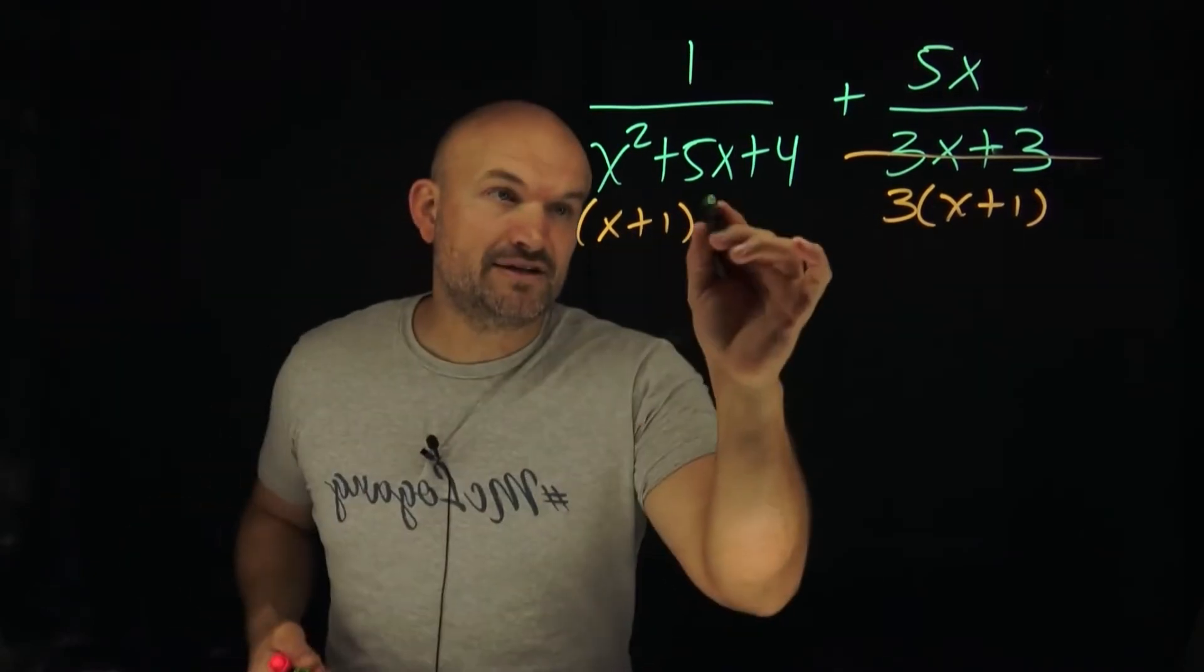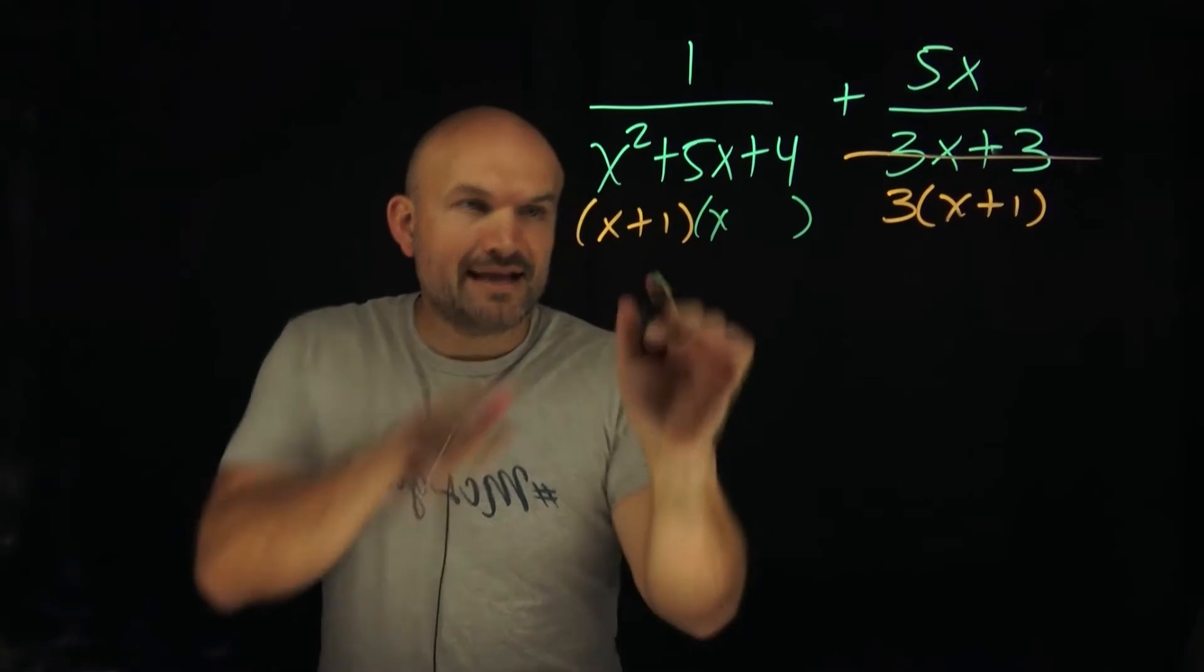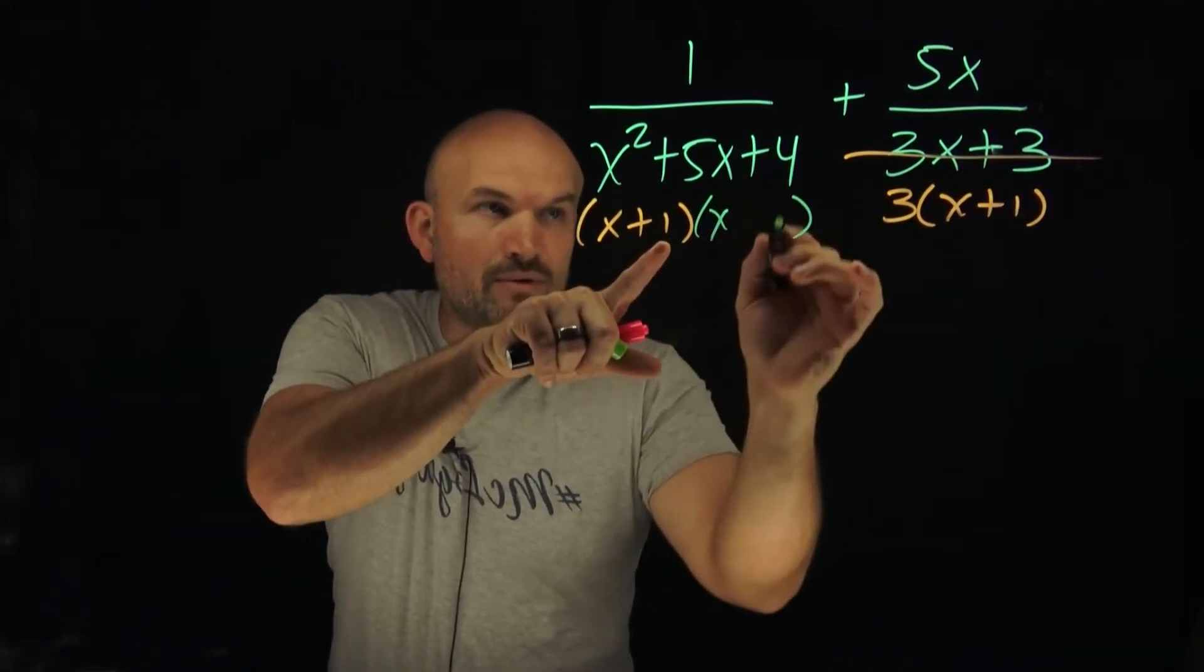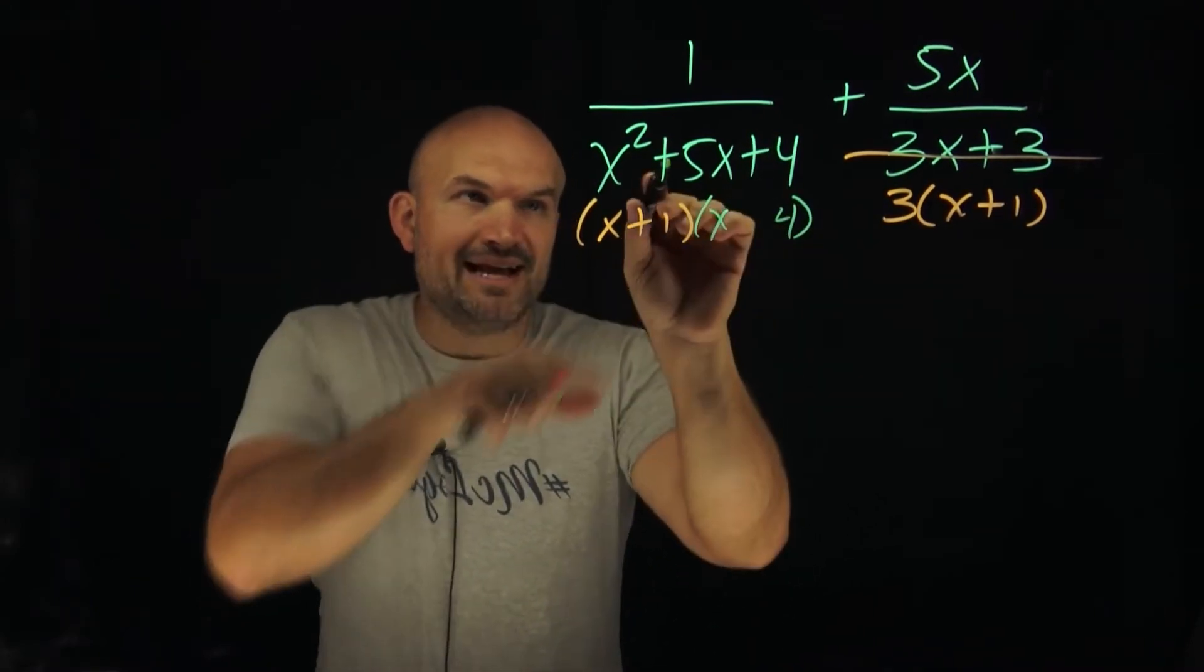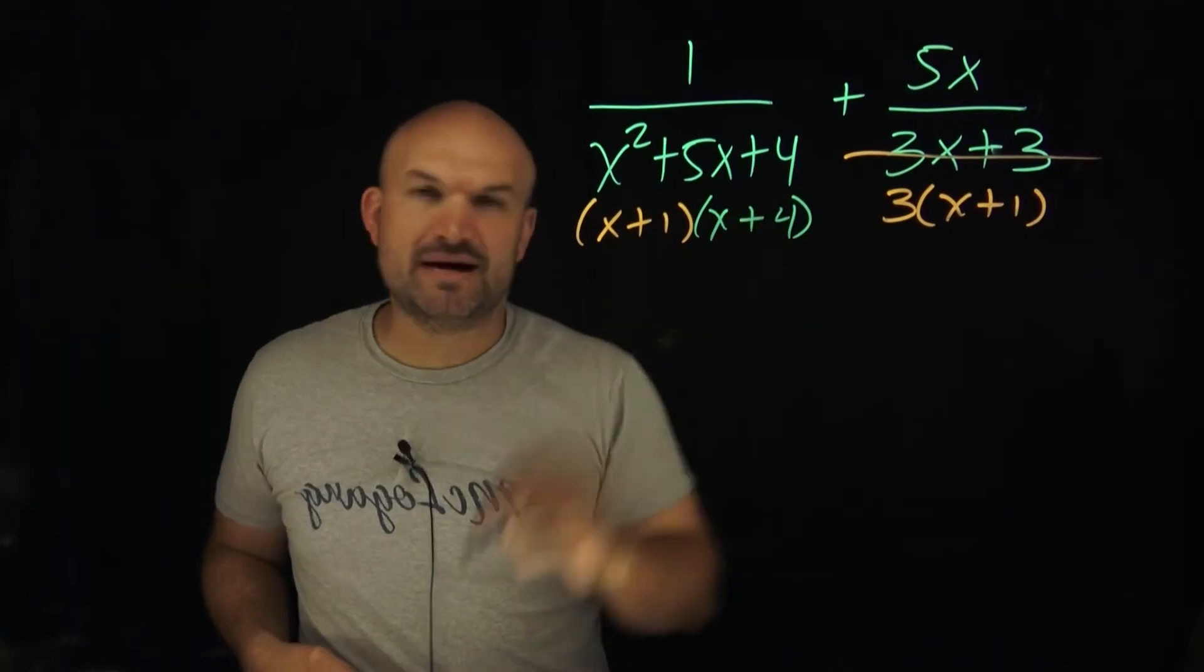So I need to multiply this by another factor. I know I'm going to have an x. Remember, one times what gives me four? That has to be a four. And everything's positive, so therefore I know this is going to be positive. Let's double check. Does this work out?